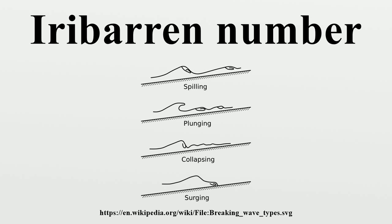Breaker types. The type of breaking wave — spilling, plunging, collapsing or surging — depends on the Iribarren number. According to Battjes, for periodic waves propagating on a plain beach, two possible choices for the Iribarren number are: one using H0, the offshore wave height in deep water, and another using Hb, the value of the wave height at the breakpoint. The breaker type's dependence on the Iribarren number is then determined approximately from these values.